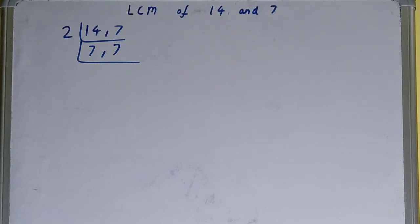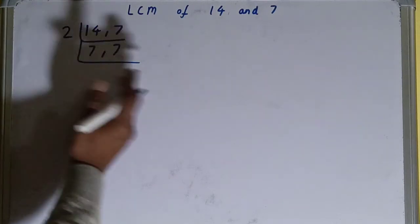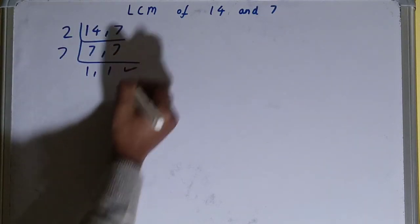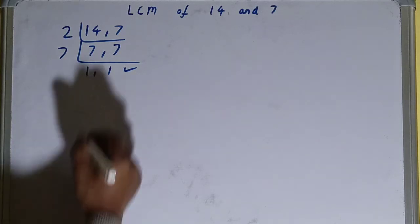So we'll go to the next prime number, that is 7, and both the numbers are divisible by 7. So we'll divide, and on dividing we'll have 1 comma 1. Once we have that, we need to stop.